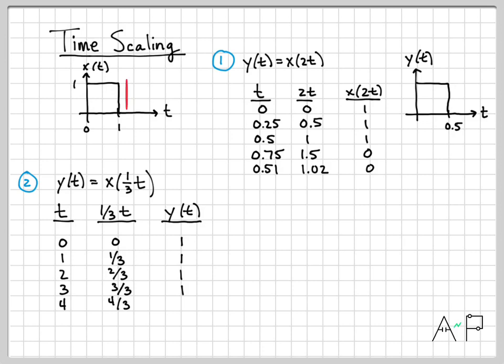When t is 4, 4/3 puts me right here, x(t) is off so y(t) at that time is 0. Now I have all the times, I have all of the corresponding values of the function, I can go ahead and make a plot for y(t) and it looks like this. As you can see this is a much more expanded version of our original starting signal.